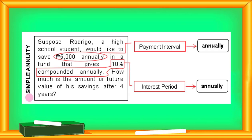What is a simple annuity? Here is an example. Suppose Rodrigo, a high school student, would like to save P5,000 annually in a fund that gives 10% compounded annually. How much is the future value of his savings after 4 years? This is a simple annuity because the payment interval — annually — and the interest period — 10% compounding annually — are the same. If the payment interval and interest rate period are the same, then we can say that we have a simple annuity.